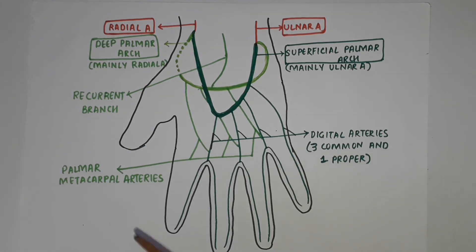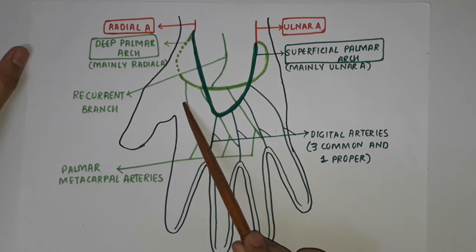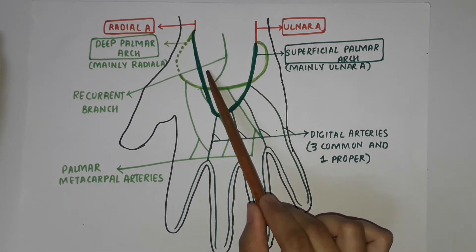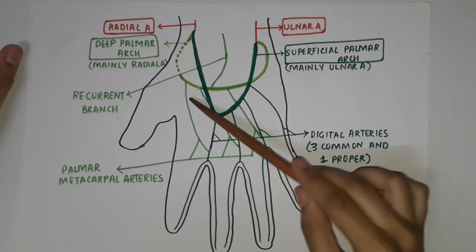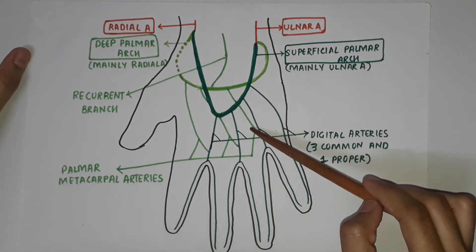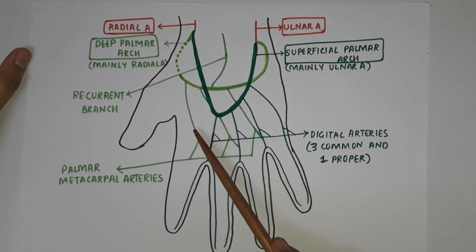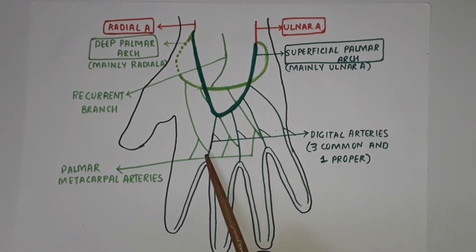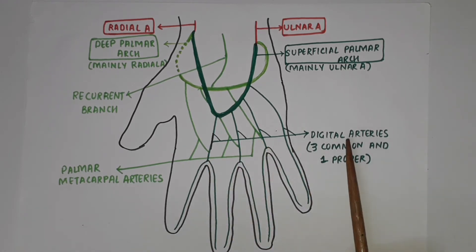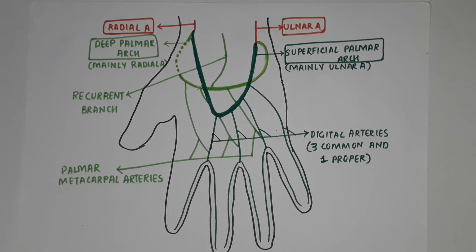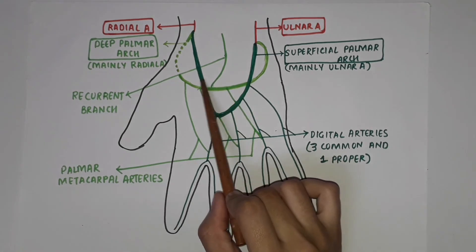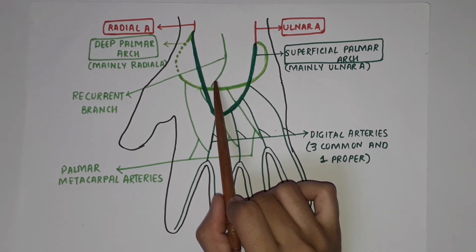The deep palmar arch gives branches from three sides. From its convex (distal) side, it gives off three palmar metacarpal arteries, which run distally in the second, third, and fourth spaces, supply the medial four metacarpal bones, and terminate at the finger cleft by joining the common digital branches of the superficial palmar arch. Dorsally, the arch gives off three proximal perforating arteries, which pass through the medial three interosseous spaces to anastomose with the dorsal metacarpal arteries. From the concave (proximal) side, it gives off recurrent branches that supply the carpal bones and joints and end in the palmar carpal arch.